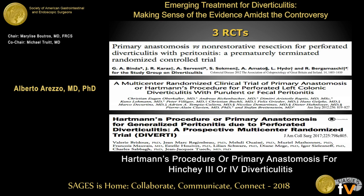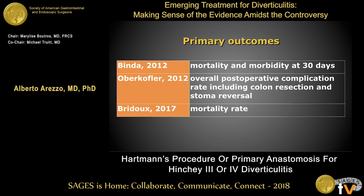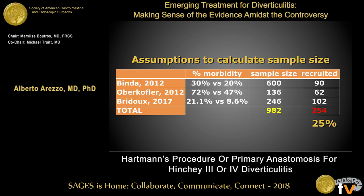These three randomized trials were published in 2012 by Gian Andrea Binda, 2012 by Oberkoffler, and 2017 by Valérie Bridoux. Primary outcomes are very similar in the three studies — basically mortality and morbidity. The assumptions to calculate sample size were very variable, producing a very different sample size: 600 patients in the Binda study and 136 by Oberkoffler. More strikingly, of about 1,000 patients that should have been recruited, only 254 actually were — only 25% — as all three studies were prematurely interrupted due to difficulties routinely experienced in randomized trials in emergency settings.